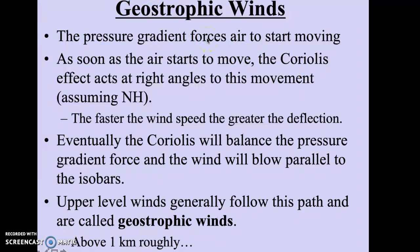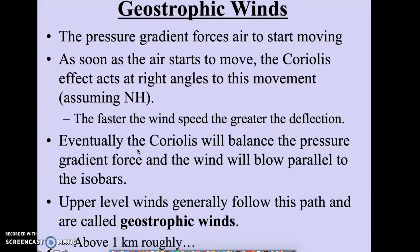The pressure gradient force starts air moving, and the Coriolis force reacts to that. If you have any change in that pressure gradient force, the Coriolis force is going to increase as the pressure gradient force increases, and decrease as the pressure gradient force decreases to keep in balance. The wind will result in blowing parallel to isobars. These are generally upper-level winds, far enough above the surface that we don't have interactions of friction.